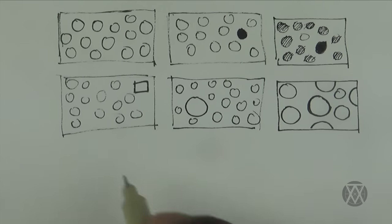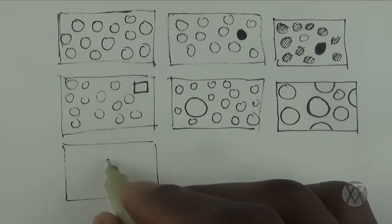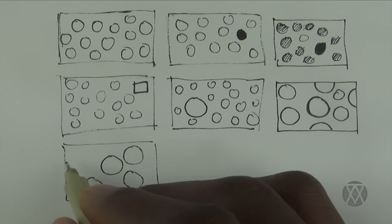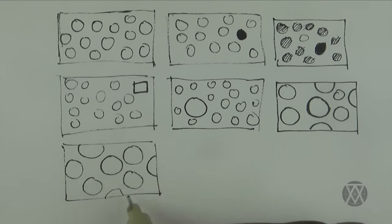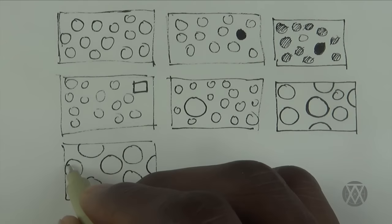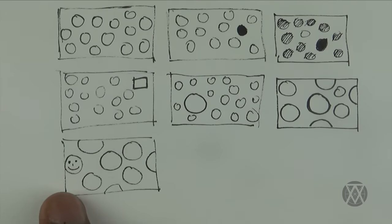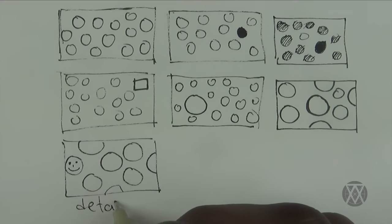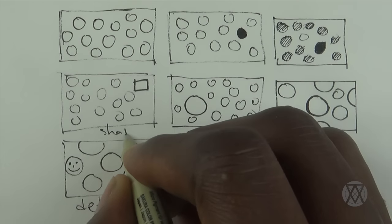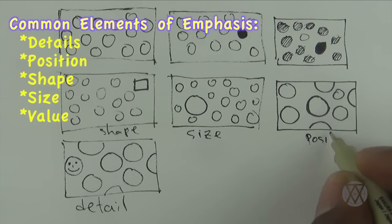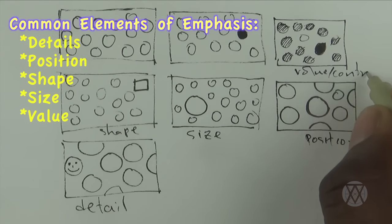Of course, because this one is in the center it will receive a lot more attention than the others around it. So position is another variable or another aspect or element of emphasis that we can use to direct your viewer's attention. These are perhaps the most common.